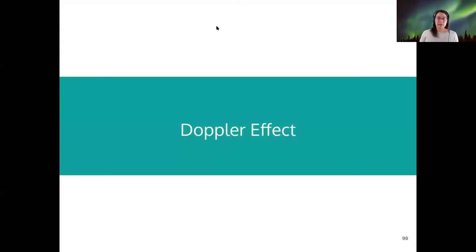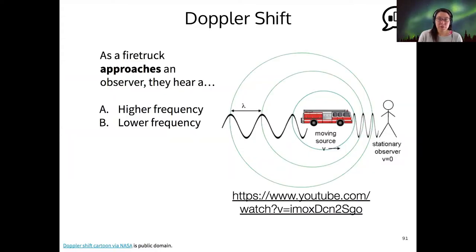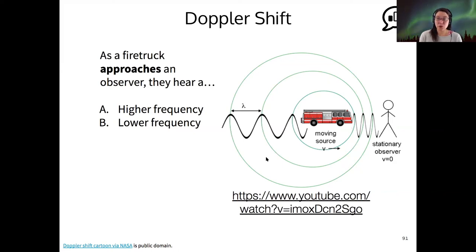I want to briefly go into the Doppler effect and then give you an activity to connect your idea of light absorption to how we measure Doppler effects from an actual astronomical system. The Doppler shift is probably familiar to you — it's basically the idea that when an object is moving toward or away from an observer, the waves that they emit will get squashed or stretched based on their motion.